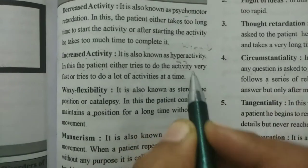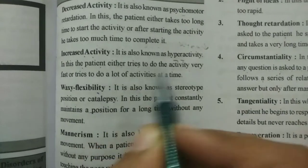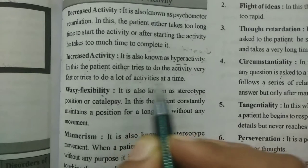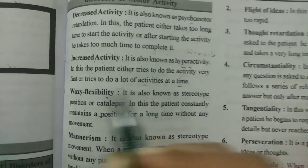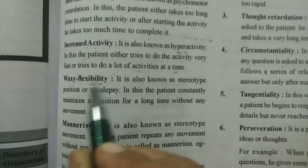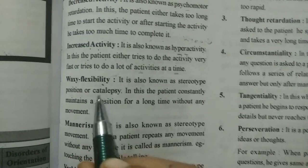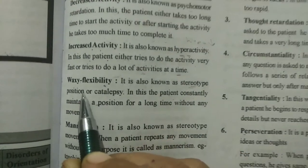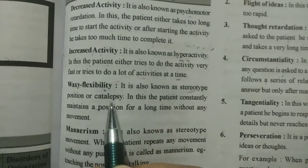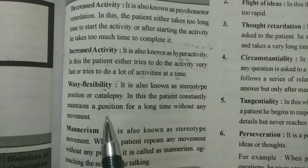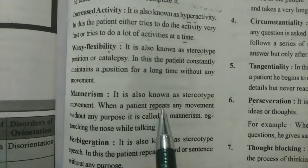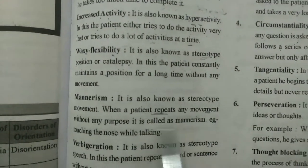In increased activity, the patient will try to do the activity very fast, or try to do a lot of activities at one time. In one time, they will try to do many activities. And then there is mannerism.